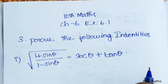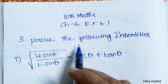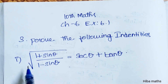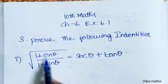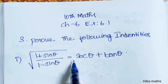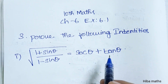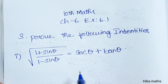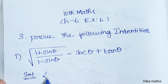Hello students, welcome to Hibamax 10 Standard Max Chapter 6, exercise 6.1, the third question. Prove the following identities. The first question is: the square root of (1 plus sin theta) divided by (1 minus sin theta) is equal to secant theta plus tan theta. We will solve the LHS.